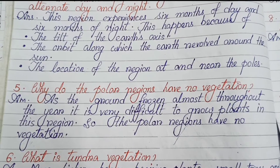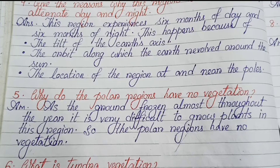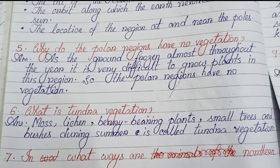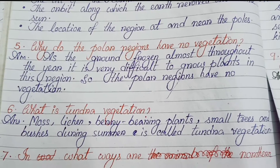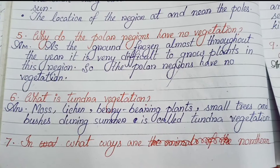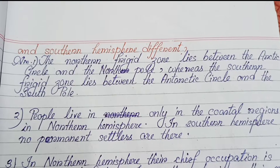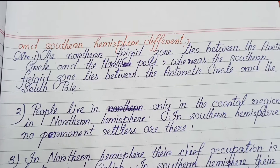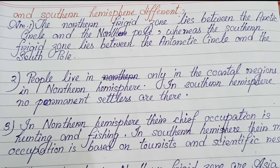Number five: Why do the polar regions have no vegetation? As the ground is frozen almost throughout the year, it is very difficult to grow plants in this region, so the polar regions have no vegetation. Number six: What is tundra vegetation? Moss, lichen, berry-bearing plants, small trees and bushes during summer is called tundra vegetation. Number seven: In what ways are the northern and southern hemispheres different? The northern frigid zone lies between the Arctic Circle and the North Pole, whereas the southern frigid zone lies between the Antarctic Circle and the South Pole.